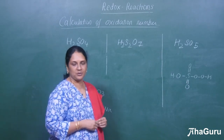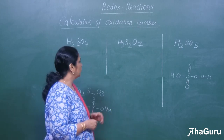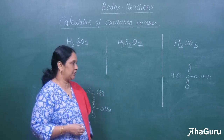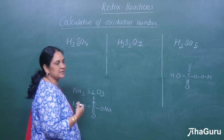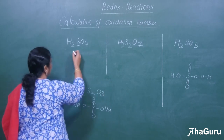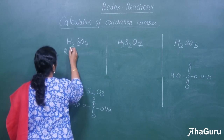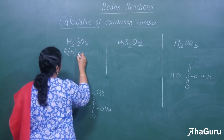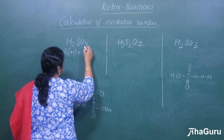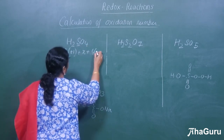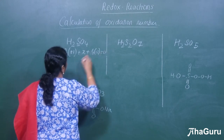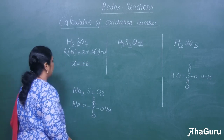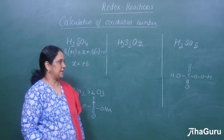Let us see a few more examples to calculate the oxidation state — this time for sulfur. First, let us take sulfuric acid, H2SO4. We have 2 hydrogen atoms: 2 × (+1), plus sulfur = x, plus 4 oxygen: 4 × (−2), all equal to 0. Solving this gives S = +6. So the oxidation number for sulfur in H2SO4 is +6.